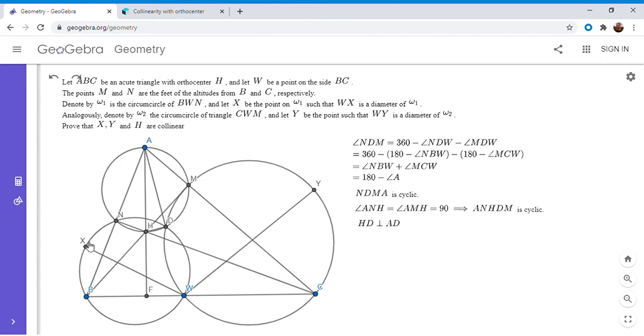Now, X is the point where WX is a diameter, and the same with Y. So I'm going to draw the centers of those two circles - I'll call them P and Q. If I want to show X, Y, and H are collinear, well, since P and Q are the midpoints of WX and WY, PQ has to be parallel to XY. And not only that, PQ is also perpendicular to DW, because the centers of two circles are perpendicular to the radical axis.